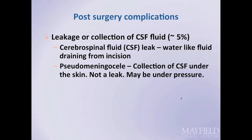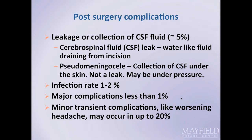As far as complications are concerned, a spinal fluid leakage rate of approximately 5% is fairly typical. For a good surgeon, that leak rate should remain less than 5%. A cerebrospinal fluid leak has the appearance of almost tap water-like fluid draining from the wound and needs to be addressed right away. Alternatively, the leak may be internal and a pseudomeningocele can form, which may also require surgical intervention. An infection rate of 1-2% is typical, major complications should be less than 1%, and transient complications such as worsening of headache or swallowing difficulty may occur in up to 20%.